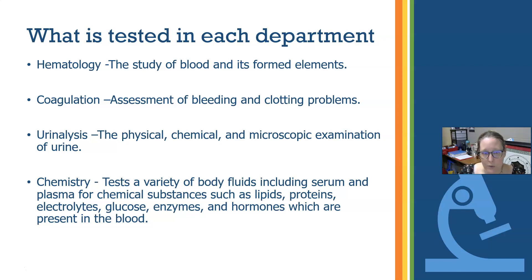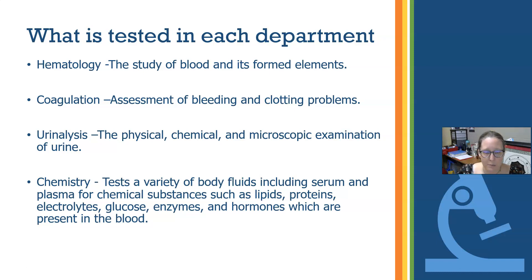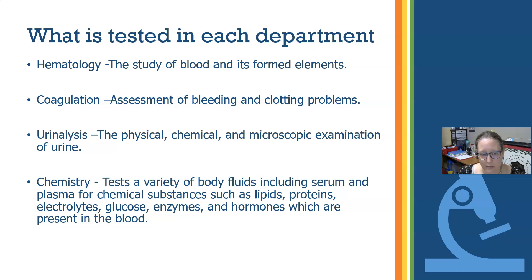Urinalysis involves physical, chemical, and microscopic examination of urine. We look at color, clarity, and cloudiness. We do the dipstick for chemical analysis, checking pH, specific gravity, sugar, ketones, etc. For the microscopic examination, we spin the sample down and put it under the microscope to look for bacteria, white cells, red cells, and other elements.